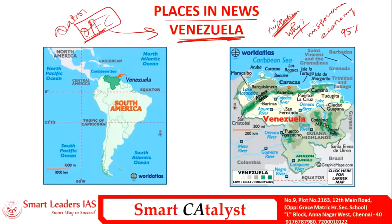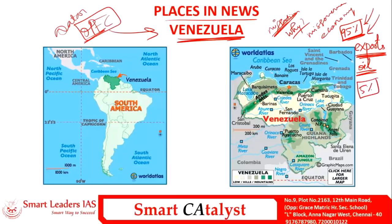Nearly 95 percent of Venezuela's income is dependent on exports, and 95 percent of those exports are oil resources — only 5 percent comes from other imports. So whenever there is a fluctuation in crude oil prices, a country like Venezuela that is mainly dependent on oil reserves gets severely affected. Venezuela's major economy is dependent on oil exports, and it is facing severe crisis, which is why a lot of people are migrating from Venezuela to other countries due to hyperinflation.